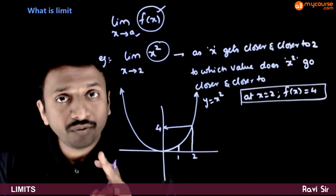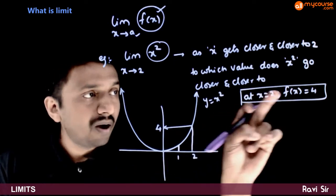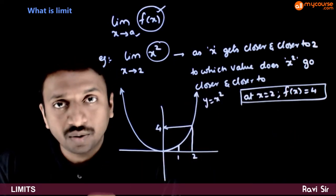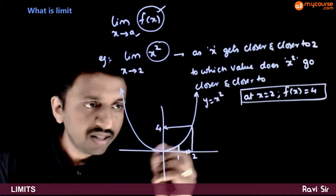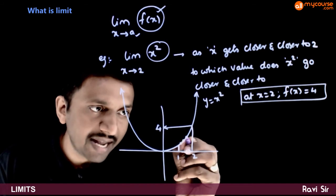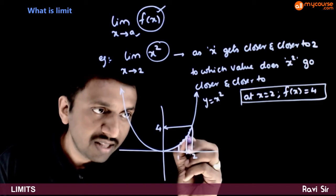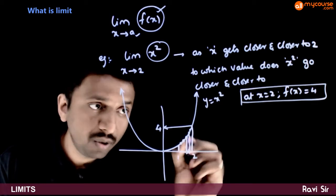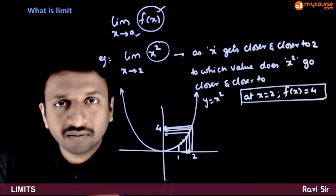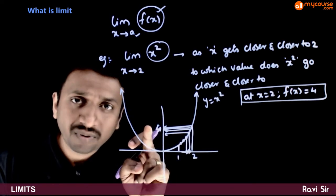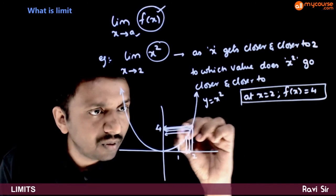When I ask you to find the limit, this is not the functional value I am asking for. What I am trying to ask is: as x goes closer and closer to 2, that is as the point's x coordinate goes closer and closer to 2, what does the y coordinate go closer and closer to? As you can clearly see, the answer has to be 4, because as the point goes closer and closer, the y value goes closer to 4.